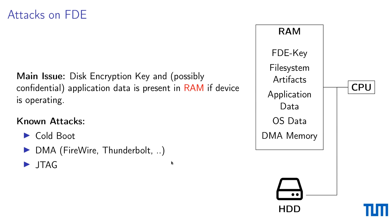Attacks on full disk encryption, for example, are cold boot attacks, attacks via DMA-enabled buses, and JTAG. Some examples of content artifacts which can be present in RAM are listed on the right-hand side: of course the full disk encryption key, but furthermore a Firefox password store will just be present in RAM, and this is also true for files which are currently opened, as these may also reside in RAM.